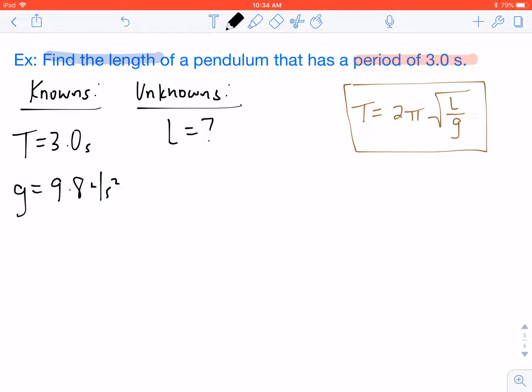So at this point, we're just going to plug in our values into our equation. So our period was 3.0 seconds. That's going to equal 2 times pi times the square root of L over 9.8. Now, since on the right side of our equation it's 2 pi times the square root of L over 9.8, my first step is to divide by 2 pi on both sides.